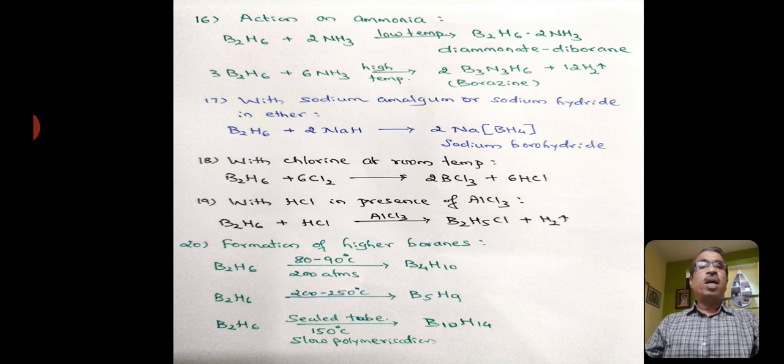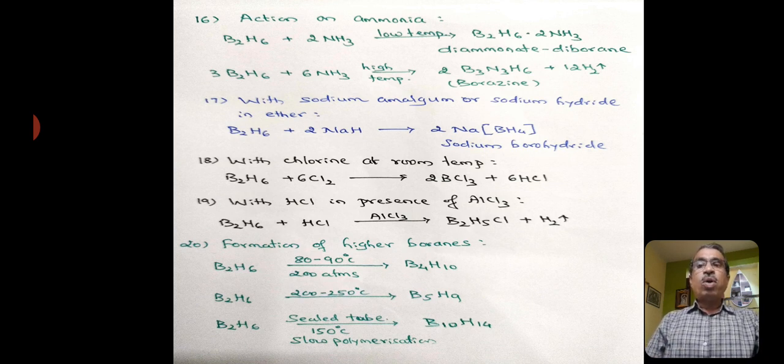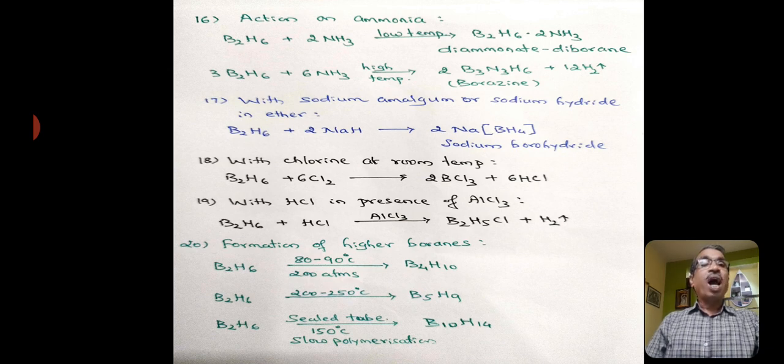Coming to another property of diborane, action on ammonia. Diborane reacts with ammonia at low temperature to form diammonate diborane. Here simply, ammonia gets added to diborane. However, at higher temperature, diborane reacts with ammonia and forms a compound called borazine or borazole.